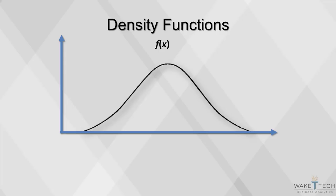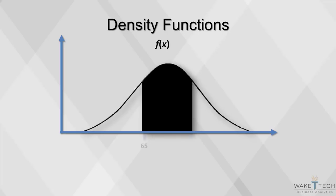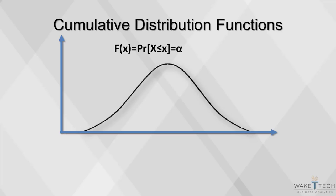For example, the shaded portion under this bell curve represents the probability of x being between 65 and 75. The cumulative distribution function, or CDF, is the probability that the variable takes a value less than or equal to x. It is the total area under the normal curve up to x.